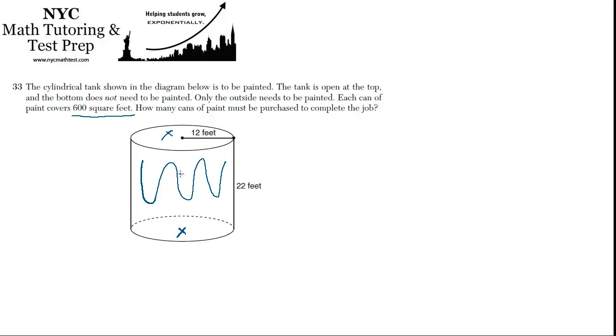If we were to think of this as like a can of soup, if you were to take the label off and unroll it, what shape would it be? It would be a rectangle, right?